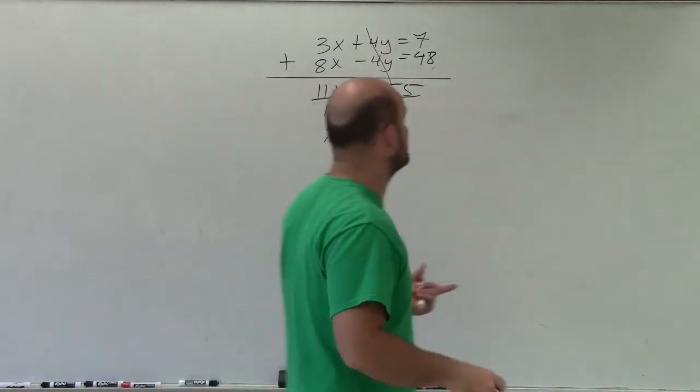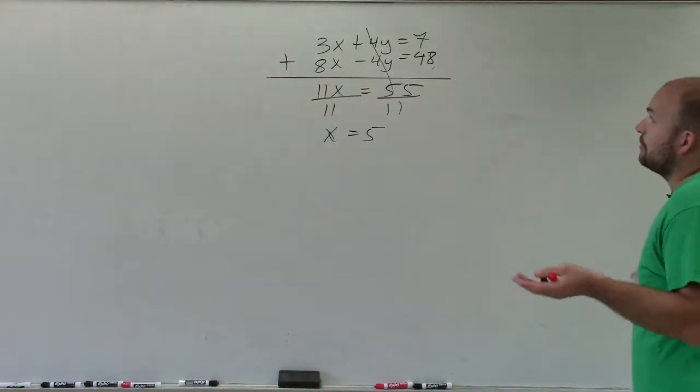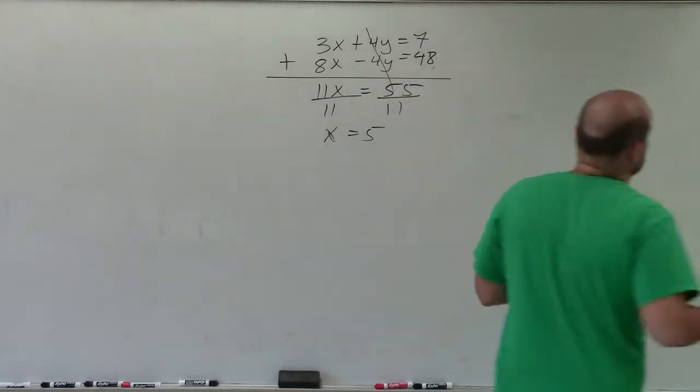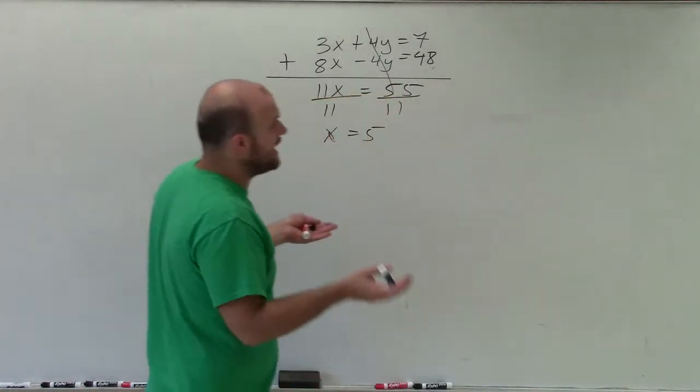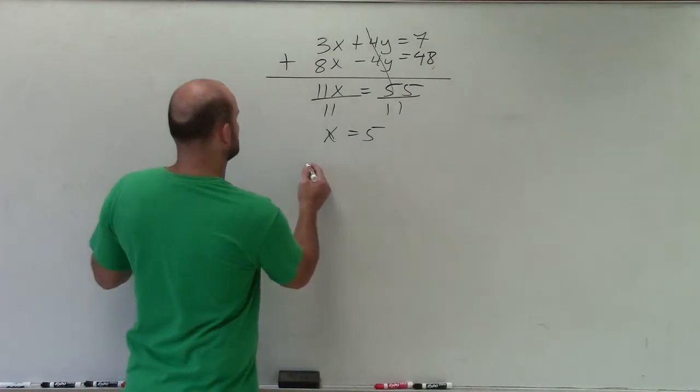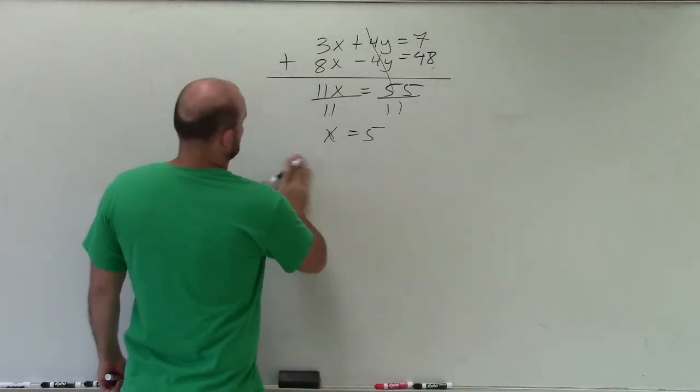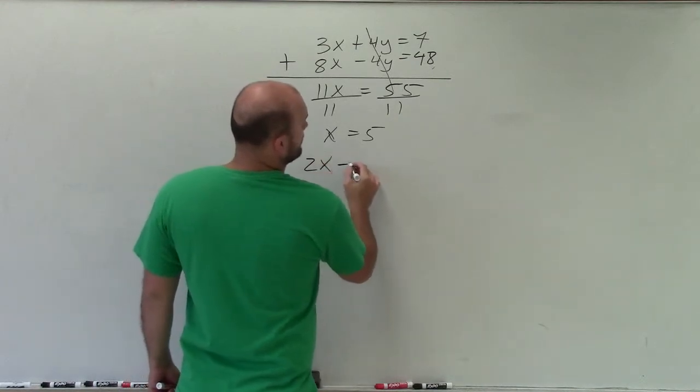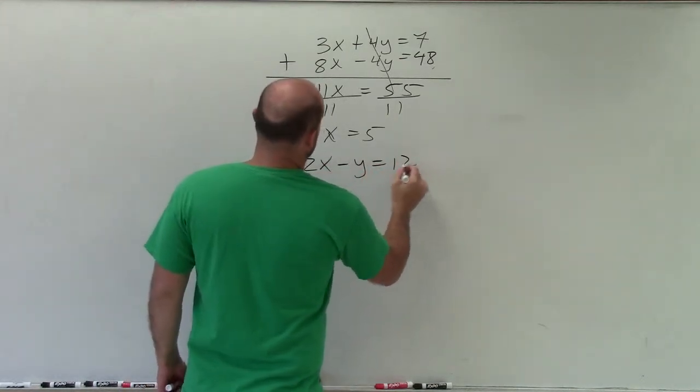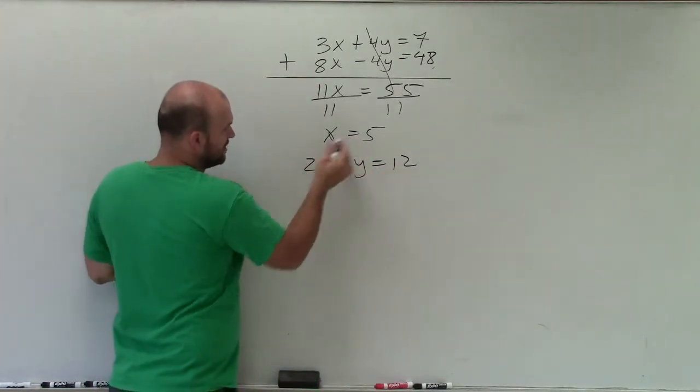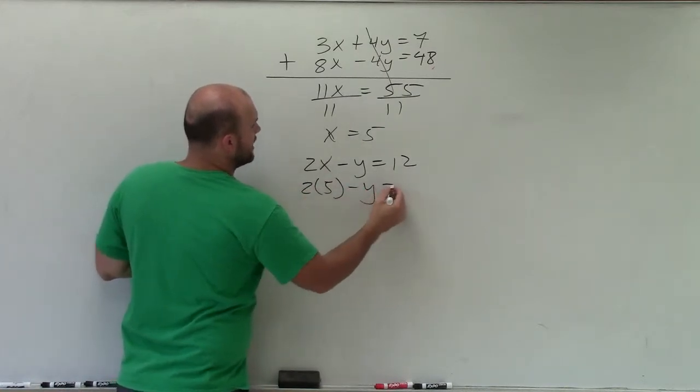So now I've determined what x equals 5 is, now I need to determine what y is. So all I simply need to do is go back to one of my original equations and solve for y. So I can go back to my original equation, which was 3x, I wrote over there, I'm sorry, 2x minus y equals 12. Well, now we know the value of x, so just plug 5 in for x, and then solve for y.